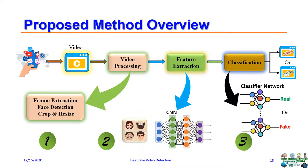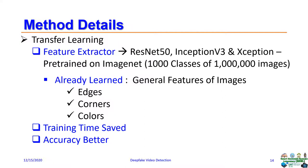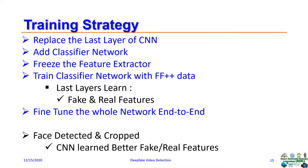Initially we used three different CNNs and finally chose the best performer. Our proposed classifier network does the classification part. We used transfer learning for our feature extractor — initially we used ResNet-50, Inception V3, and Xception. They had already learned general features of images like edges, corners, and colors. There are two advantages to using transfer learning: training time is saved and accuracy is better. During training we replaced the last layer of the CNN and added our classifier network.